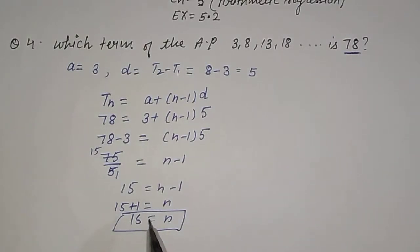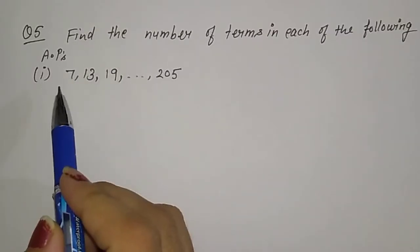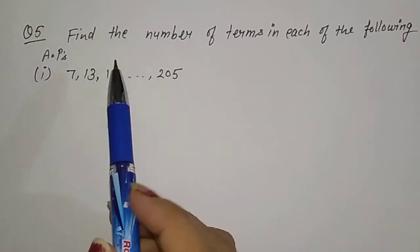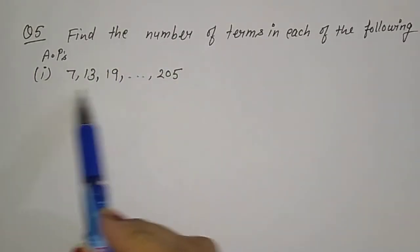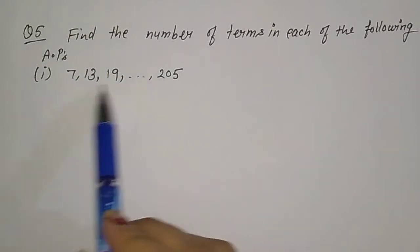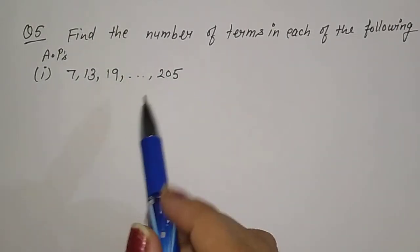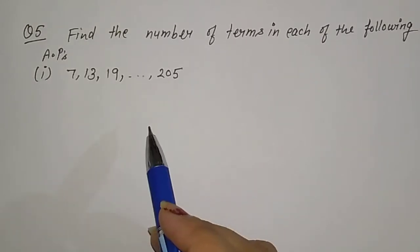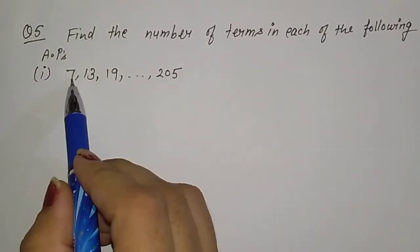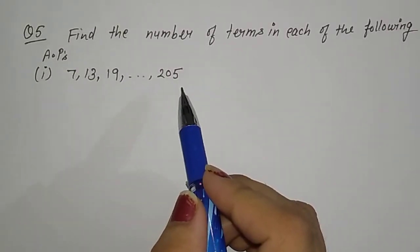Now come to question number 5, first part. Find the number of terms in each of the following APs. You are told this is an arithmetic progression and you need to find how many terms are in it — from 7 up to 205. So you need to find the number of terms.